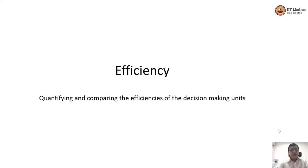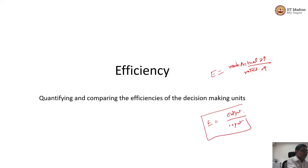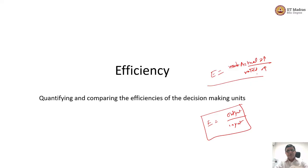Let me clarify right away: we may look at efficiency as actual output divided by rated output, or as output divided by input. We are going with the second definition — output divided by input. That's the way we are going to proceed, and we are going to focus only on economic efficiency. Let us quickly understand what context we are talking about.